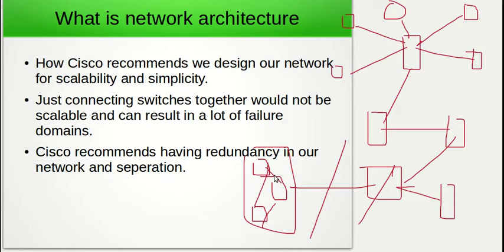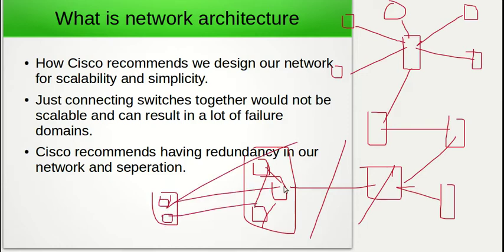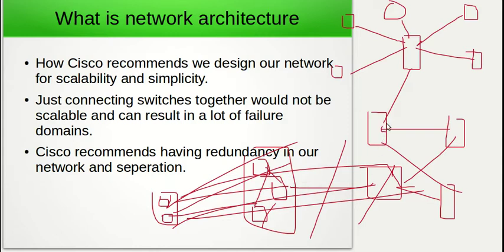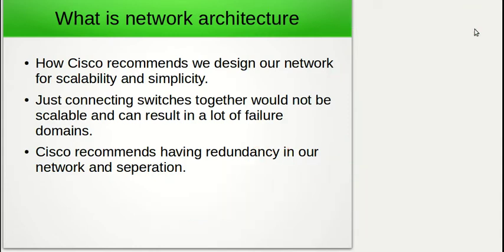There's also no scalability, because if we wanted to add redundancy we'd have to have multiple connections running between our switches, which isn't feasible. We would have cabling everywhere, which would be an administrative overhead. So instead of going through all this headache, Cisco recommends that we follow a certain model in order to build our networks the right way with scalability and redundancy in mind.